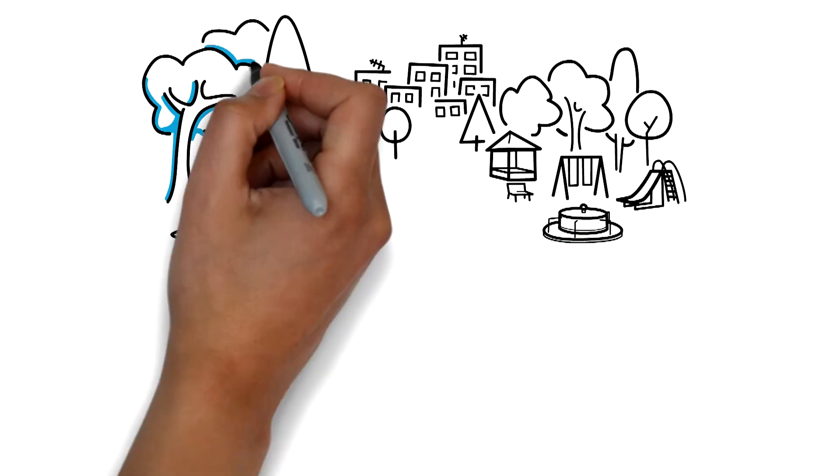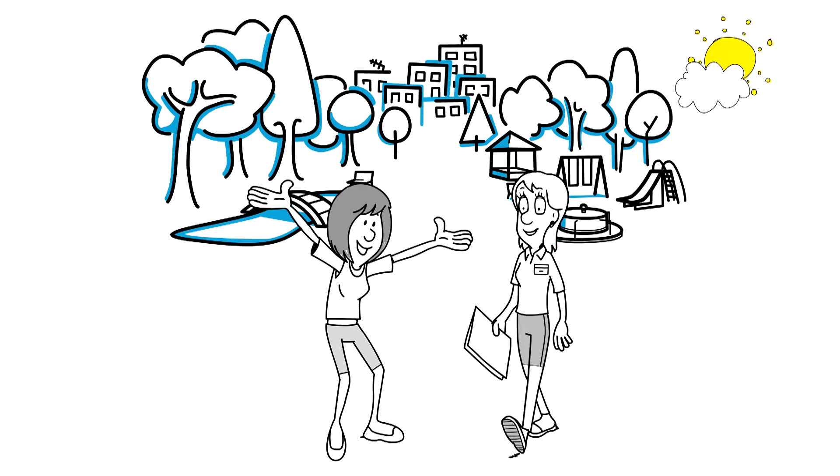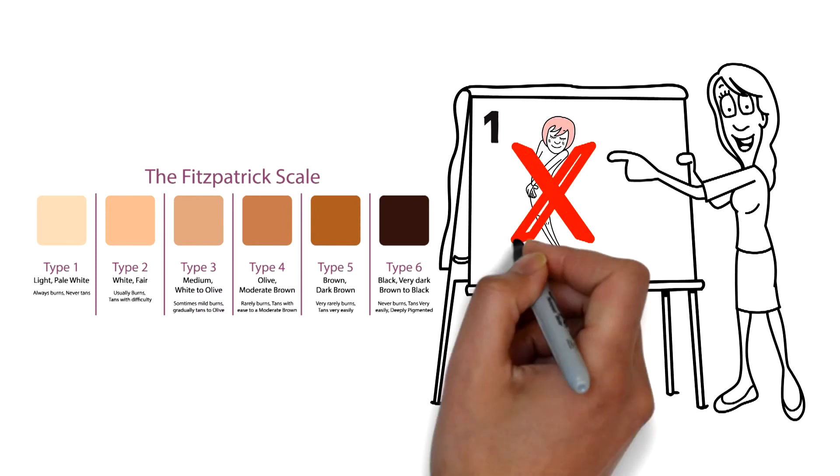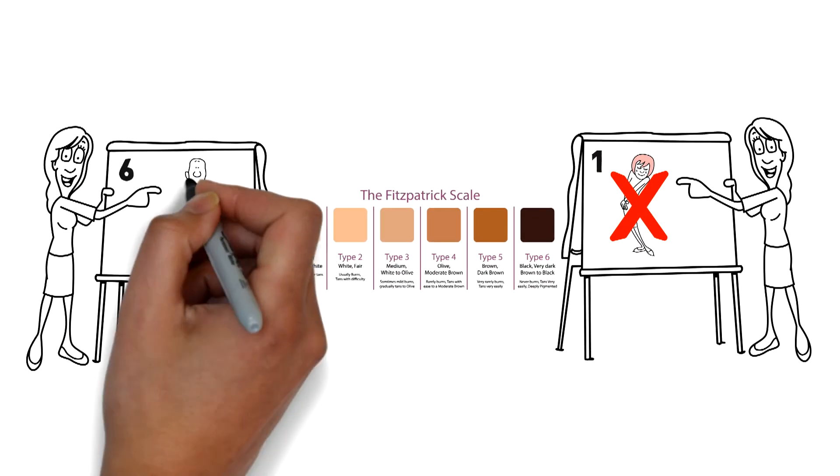When in the sun, it's important to protect ourselves from sunburn by knowing our skin type. There are six skin types. The fairest is type 1. You should not suntan. The darkest is type 6.